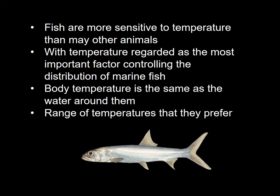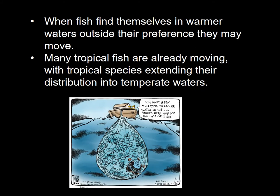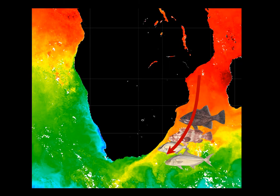Fish are more sensitive to temperature than many other animals, with water temperature regarded as the most important factor controlling the distribution of marine fish. This is because fish are ectotherms, meaning their body temperature is the same as the water around them, and they have a range of temperatures that they prefer. When fish find themselves in warmer waters outside of their preference, they may move if able to do so, with many tropical species already extending their distribution into temperate waters. This has already been recorded for many warm-temperate estuaries in South Africa, where there is an increase in occurrence of subtropical species.